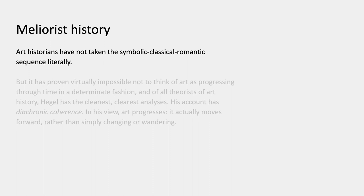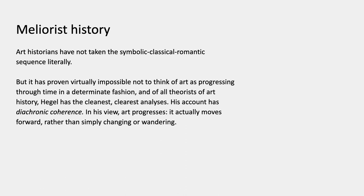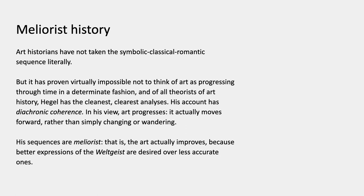Art historians haven't taken this literally — it's not something that's used in art history. But it's proven almost impossible not to think of art as progressing through time in some determinate fashion. Of all the theorists of art history, Hegel has the cleanest analysis, the easiest to remember. His account has diachronic coherence; it hangs together as a story that takes place through time. In his view, art progresses. Progression is the great word of the later 19th century, used to describe industrialization and economic progress.